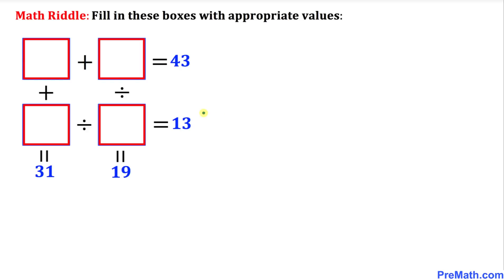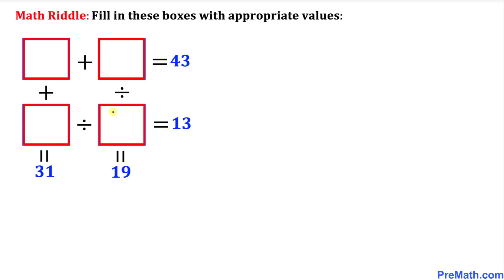Welcome to Pre-Math. In this video tutorial, we are going to solve this given math riddle. We are going to fill in these boxes such that when we add or divide them, we are supposed to get 43, 13, 19, and 31, as you can see in this figure. So let's go ahead and get started with our solution.